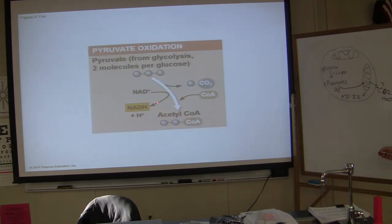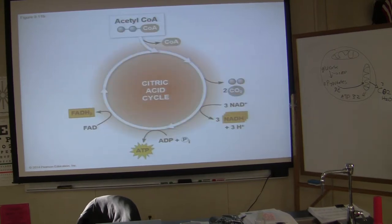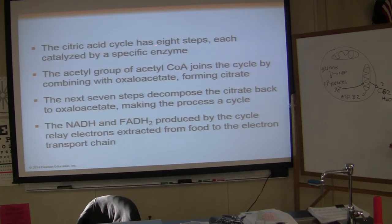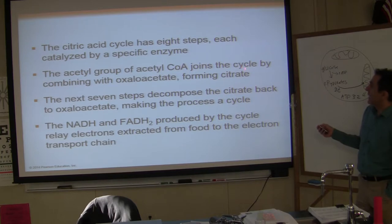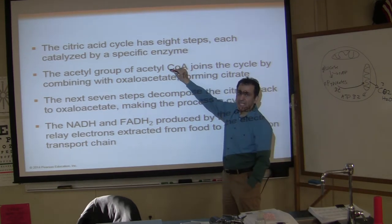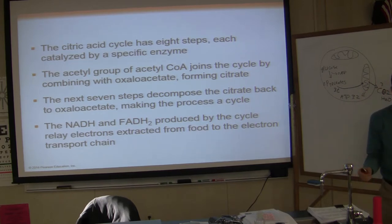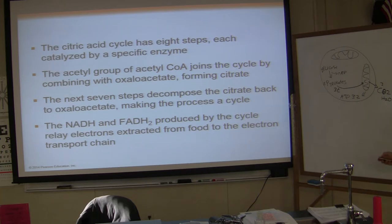Let's go over step by step what happens. You know these two molecules per glucose become acetyl-CoA. Your cells make two acetyl-CoA per glucose molecule. The citric acid cycle has eight steps, each catalyzed by specific enzymes. The acetyl group of acetyl-CoA joins the cycle by combining with oxaloacetate, forming citrate. That portion of the cycle you must know.